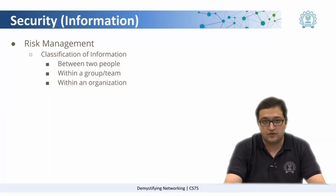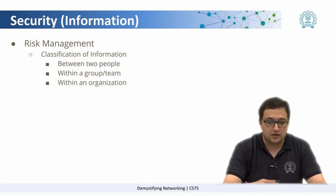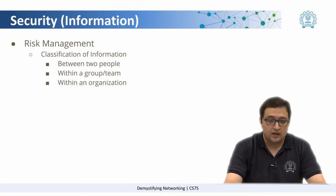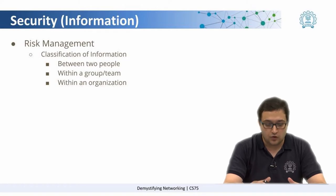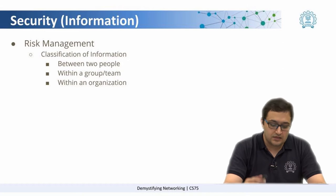When you have information, it has to be classified into different levels of security. We can have three levels of classification. For example, we can have something which is secure between two people — that can be called confidential information. Some information that is secure between only a group of people, we can call it a secret. And there is some information which is secure only to an organization.